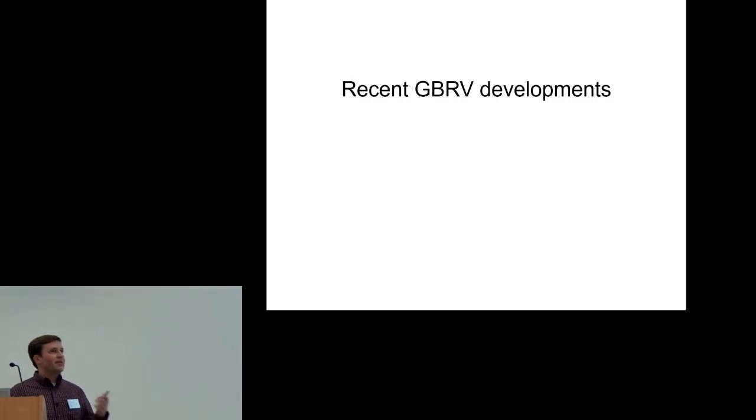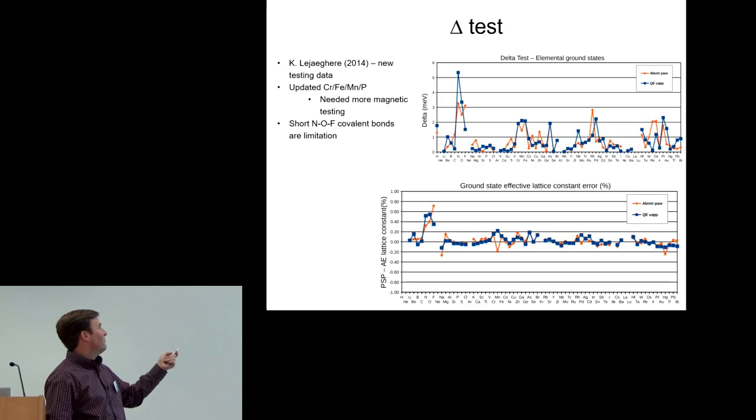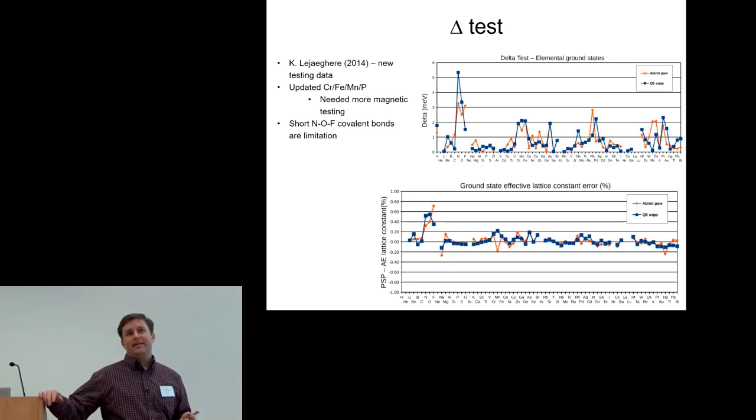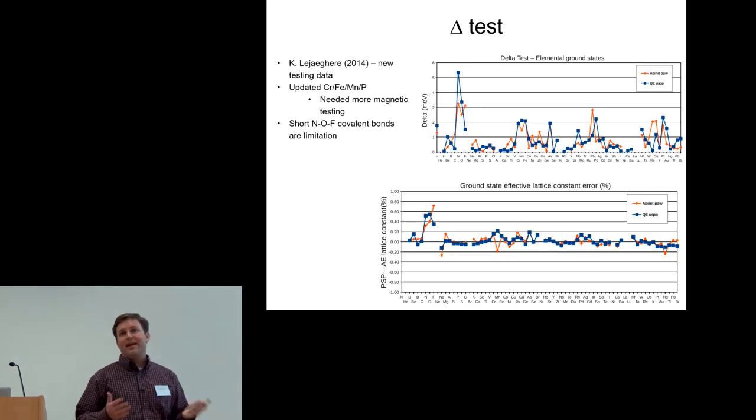Here are some updates to the initial table. New all electron data became available as part of the delta test, part of Kurt's work. One thing I discovered doing this is that my initial testing set did not include enough spin polarized calculations. In particular, manganese, chromium, iron—these are some of the most problematic elements typically.